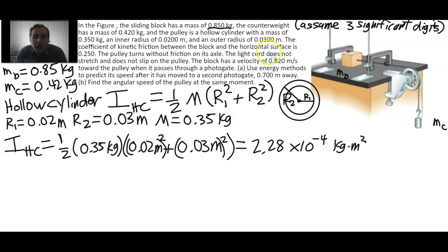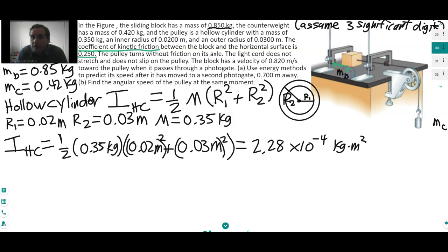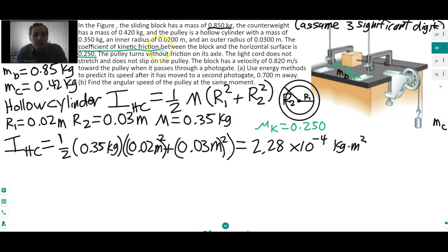The coefficient of kinetic friction between the block and the horizontal surface is 0.250, so there is a kinetic friction force on the block directed opposite to its motion. μk = 0.250 — it's unitless because coefficients of friction are dimensionless. The pulley turns without friction on its axle.